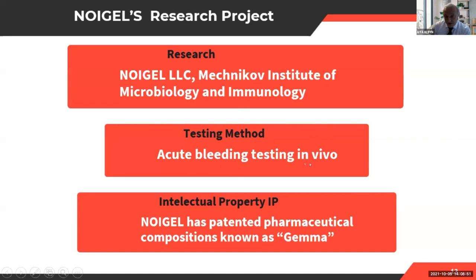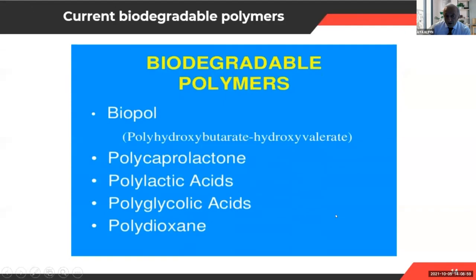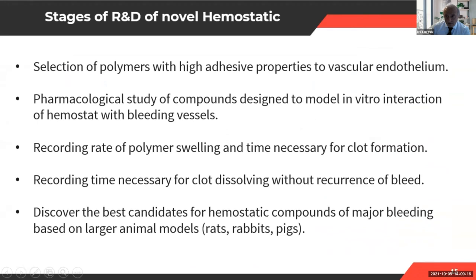The research was done overseas. We tested acute bleeding in vivo in animal-based studies, and from this we developed the product called Gamma. Here is a quick overview of existing biodegradable polymers already on the market. For the novel hemostatic, we wanted to select a polymer with high adhesive properties to vascular endothelium — attracted specifically to the vessels at the bleeding site, not just the entire wound.